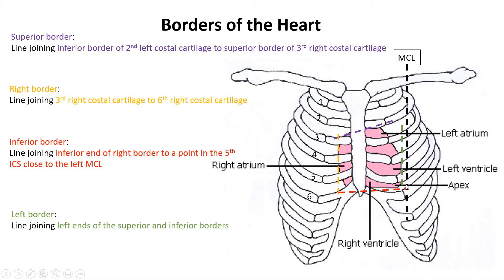That's it for the borders of the heart. For MCQs, they might say a man was stabbed in the right fourth intercostal space — from our surface anatomy, that was the right border. Or they might say a man was stabbed in the parasternal region on the left side in the fifth interspace. Parasternal means beside the sternum, and in the fifth intercostal space we know this is made up by the right ventricle, which is part of the inferior border.